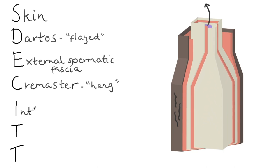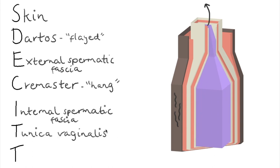The internal spermatic fascia is next. And then we have the tunica vaginalis. Now these last four layers that we've mentioned contribute to the spermatic cord. That's the external spermatic fascia, the cremaster muscle, the internal spermatic fascia, and the tunica vaginalis. It's a good one to remember for your exams.